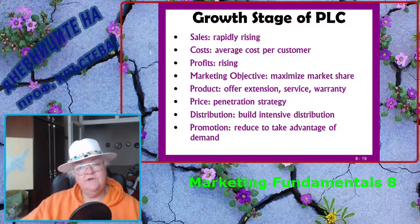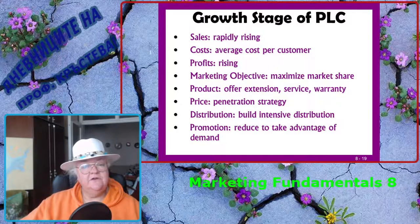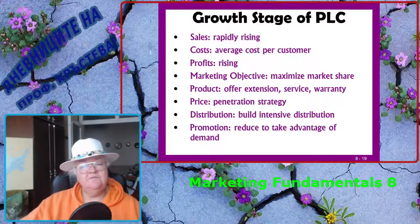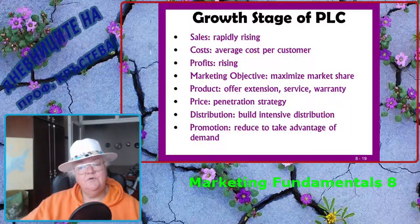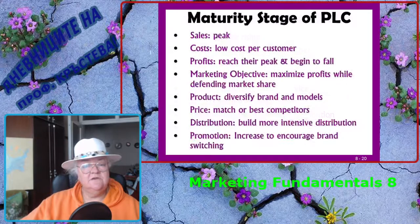At the growth stage of the product life cycle, sales are rapidly rising, costs are average per consumer, and profits are rising. Marketing objectives are to maximize market share. The product offering includes extensions, service, and warranty. Price follows a penetration strategy. Distribution needs to build intensive distribution, and promotion is addressed to take advantage of demand.